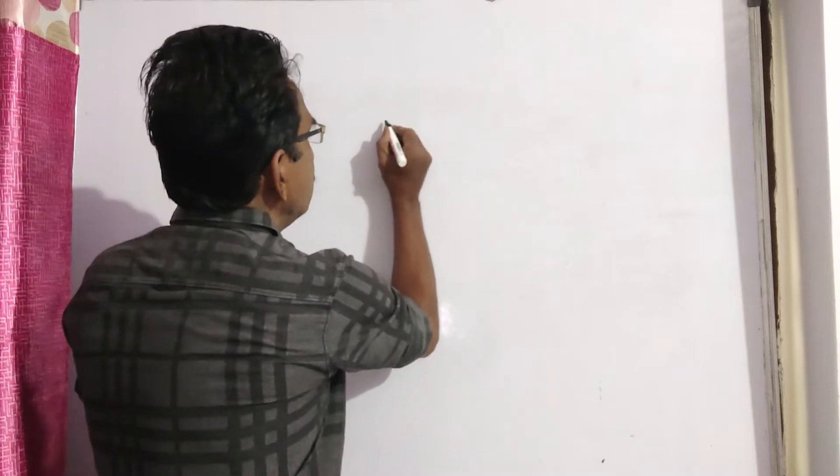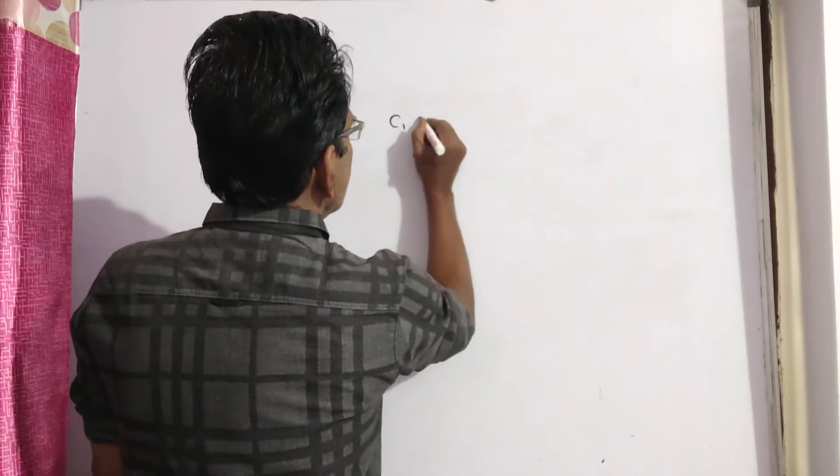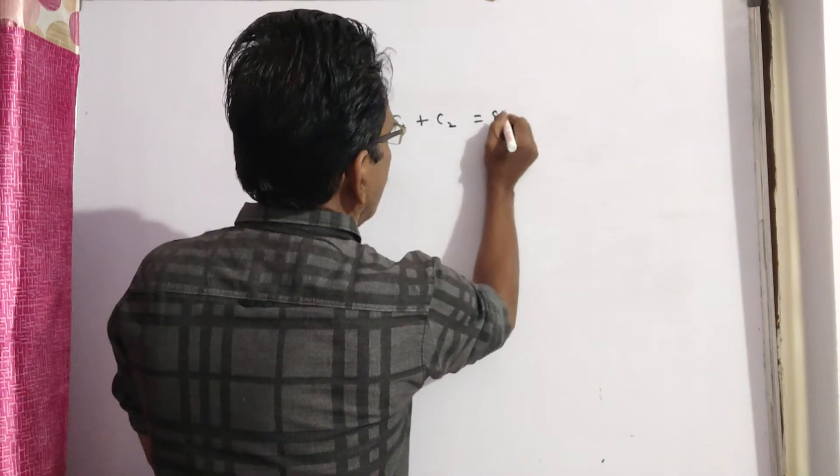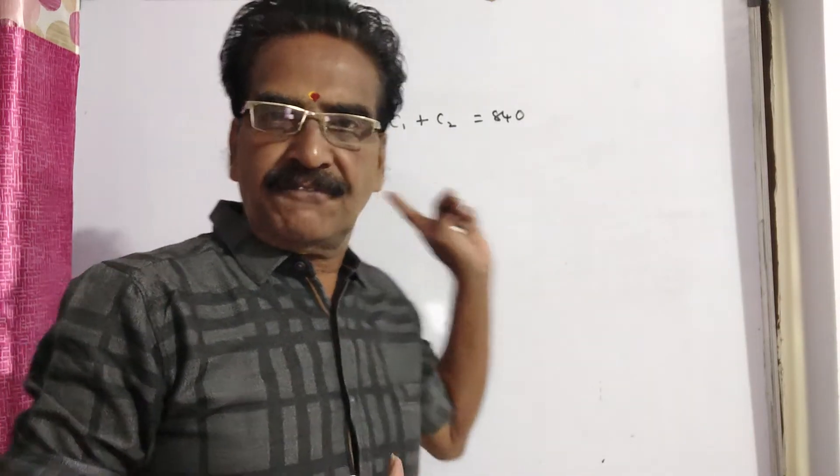Let the cost price of the two watches be C1 and C2. Then C1 plus C2 is equal to Rs. 840. Now, C1 is sold at a gain of 16% and C2 is sold at a loss of 12%. Since there is no profit or no loss on the whole transaction, the profit on the first watch must be equal to the loss on the second watch.